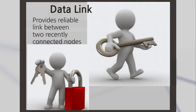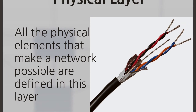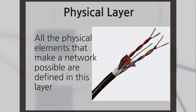The data link layer provides a reliable link between two directly connected nodes by detecting and correcting errors that may occur in the physical layer. In this layer, we can find the physical addresses placed permanently in a chip known as Media Access Control (MAC), which controls how computers gain access to data and permission to transmit it.